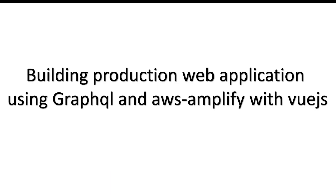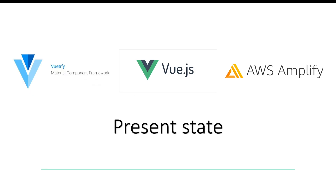Hello CodeGurus, welcome back to our session building production web applications using GraphQL and AWS Amplify with Vue.js. So what is our present state? Till now we have been using AWS Amplify for creating a backend and Vue.js for creating our frontends, also utilizing the Vuetify framework — a Vue.js-based framework that offers all the material components out of the box. With this combination of these three frameworks we have been creating a web application.